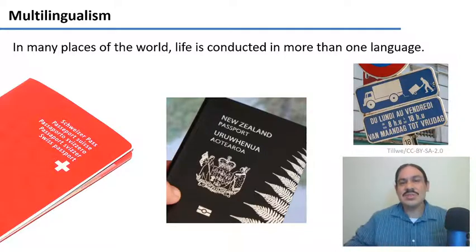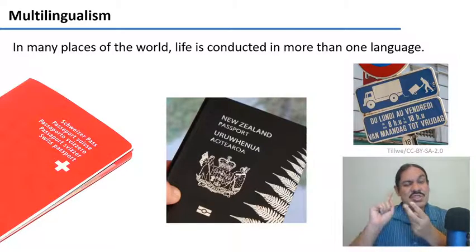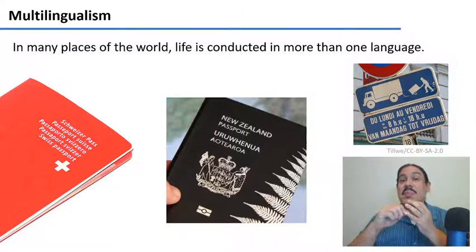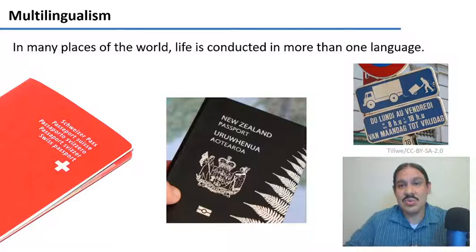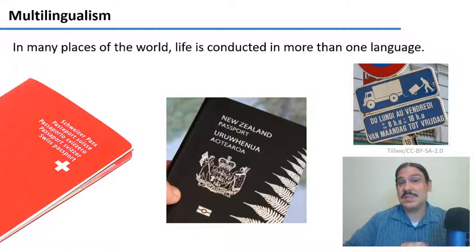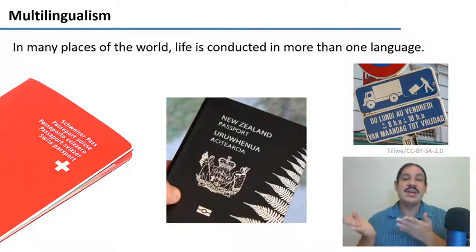This is also true in Switzerland, where there are four official languages: French, Italian, German, and a Romance language called Romansh, which is also official. There must be schools for each of these languages and the government needs to provide services for speakers of each. There's also the case in Canada, where the government needs to speak both English and French, and in Belgium, where the government provides signs in both French and Flemish, which is related to Dutch.